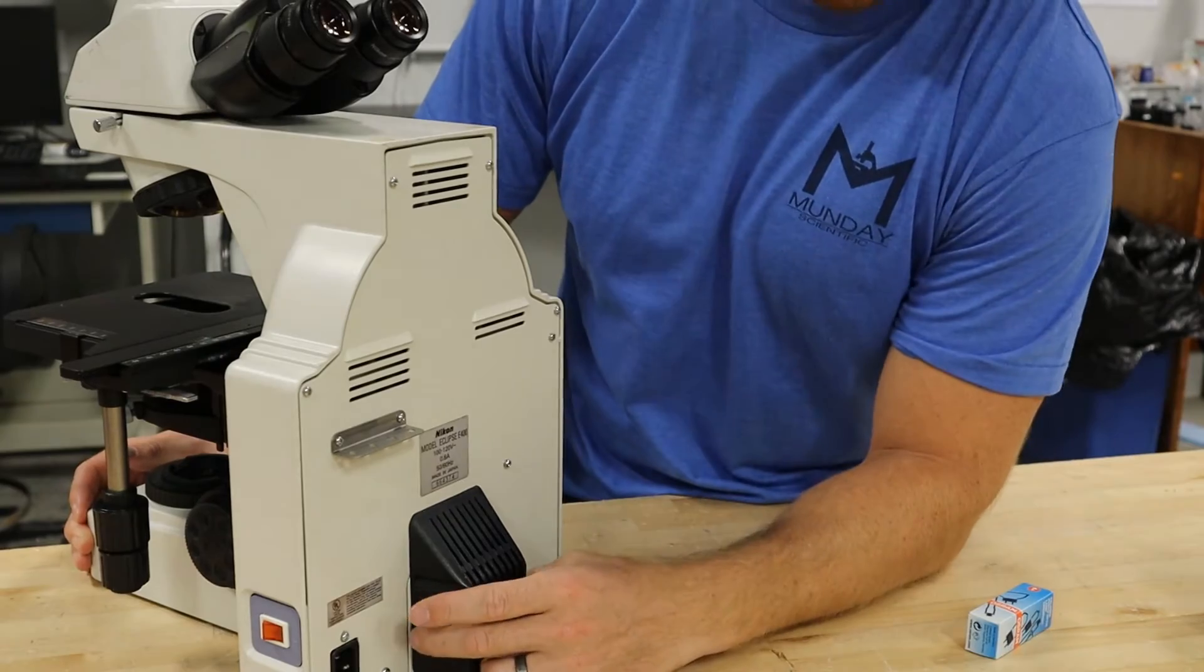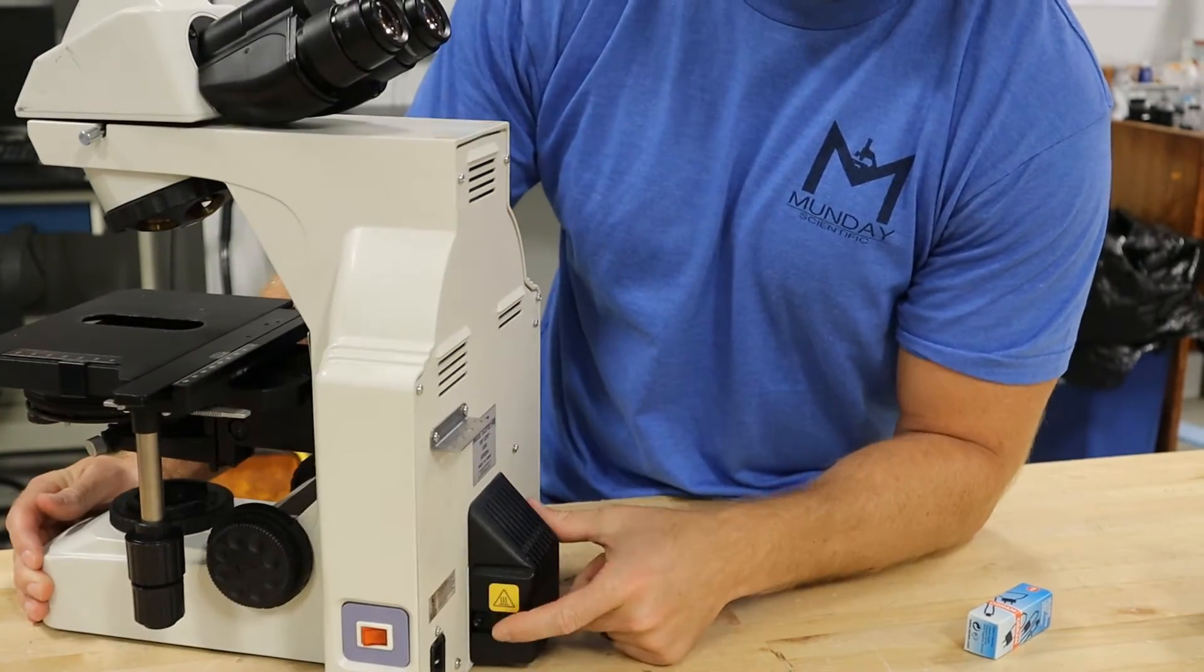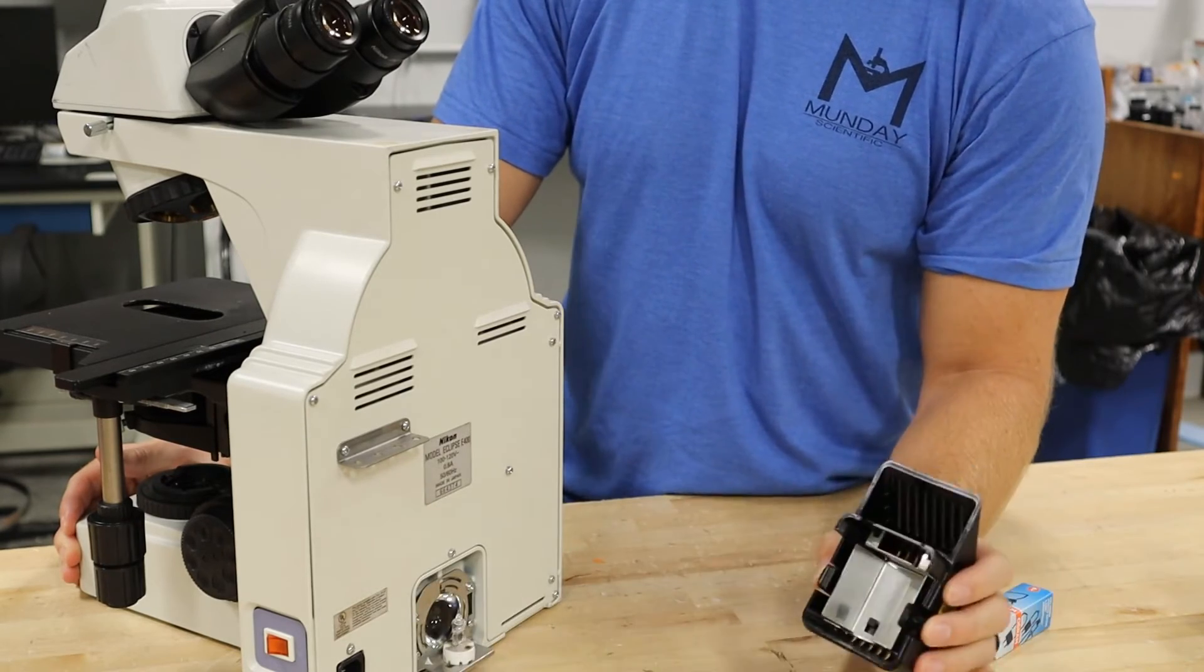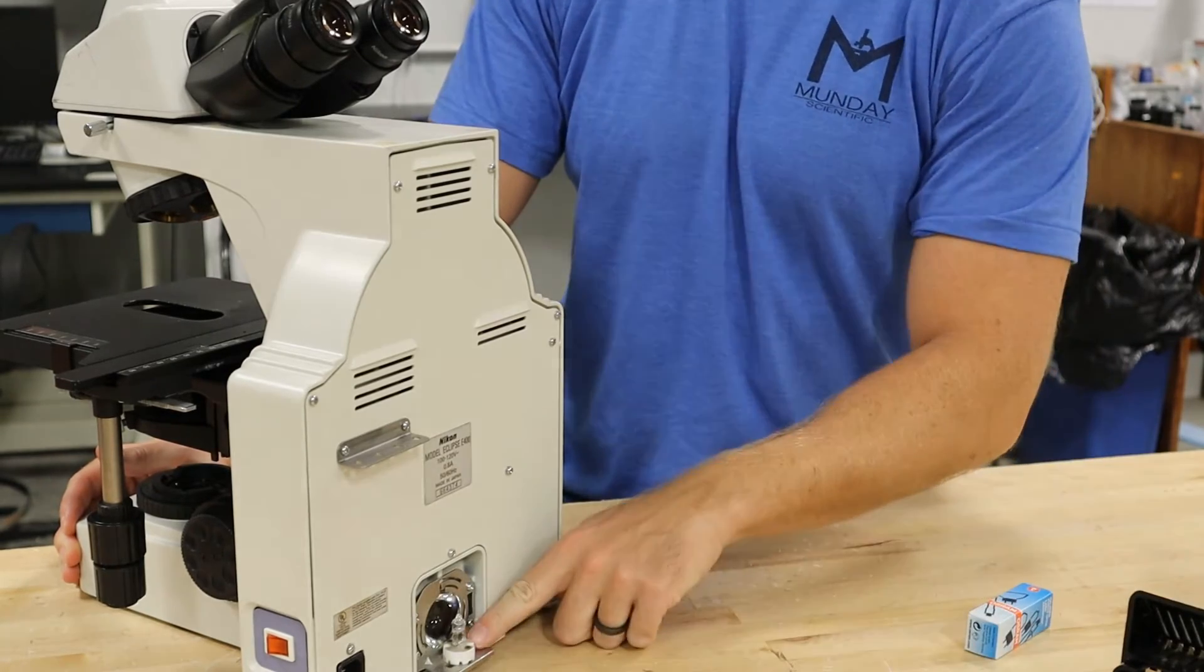First, we're going to depress both of these tabs, this inner tab here on the side of the lamp house. When you squeeze them, it pulls right off and exposes the bulb.